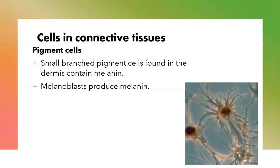The pigment cells are small branching pigment cells found in the dermis. They contain melanin, a pigment that gives the skin its dark color. They are produced by the melanocytes or melanoblasts. When activated, the melanoblasts become melanocytes and they produce melanin. So these are cells that contain pigments, which is why we call them pigment cells.